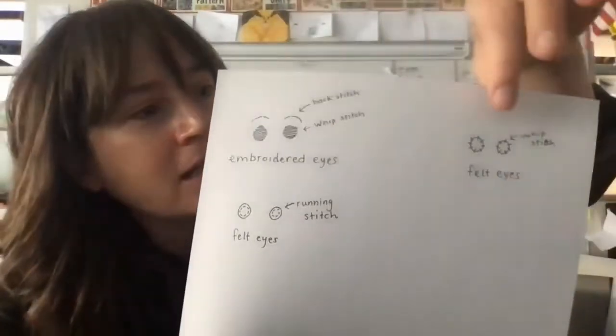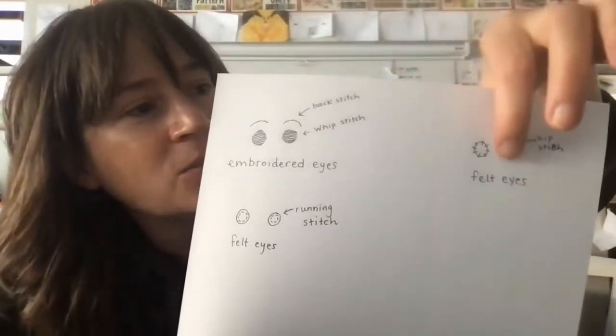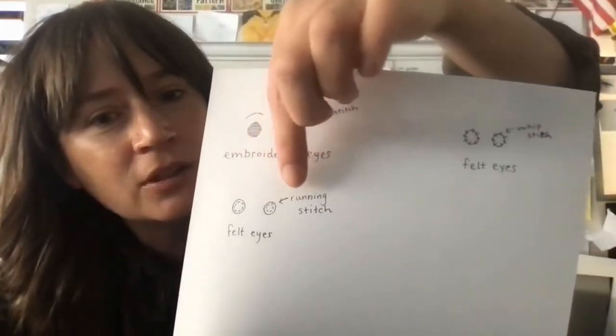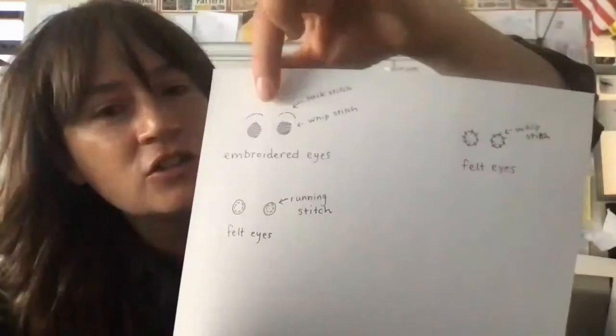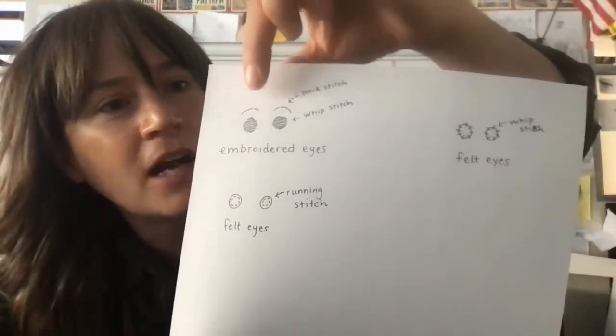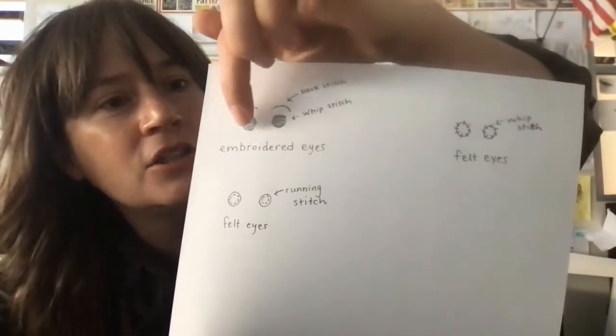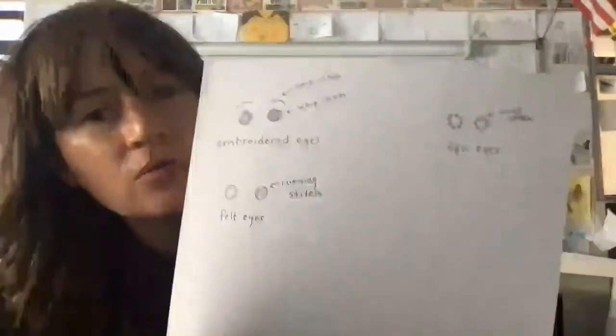I'm going to attempt making these felt eyes where I attach them with this little whip stitch. I'm going to attempt making felt eyes where I attach them with a little running stitch. And then I'm going to attempt to make some fully embroidered eyes where I use a backstitch up here on the top and then just like a little looped whip stitch right there.